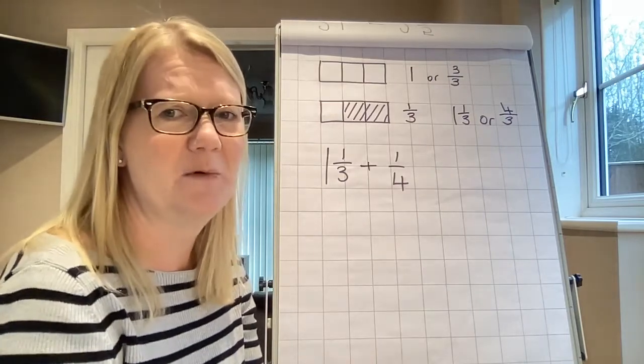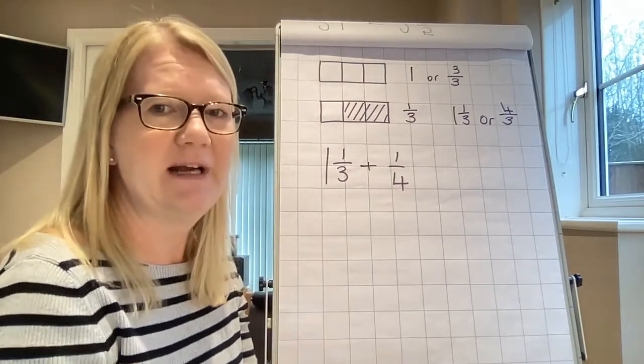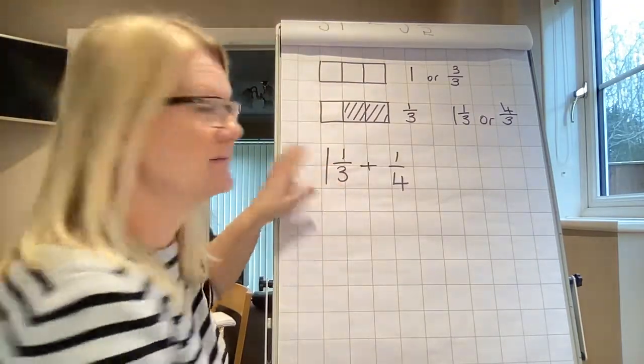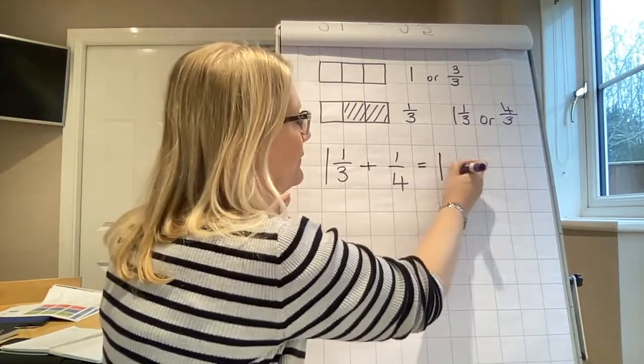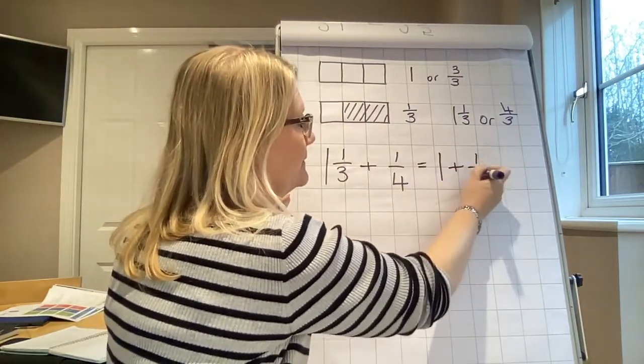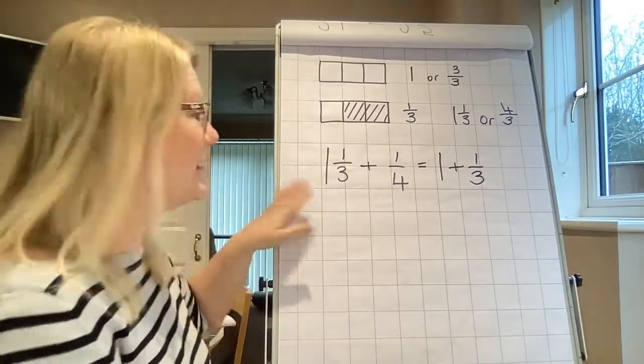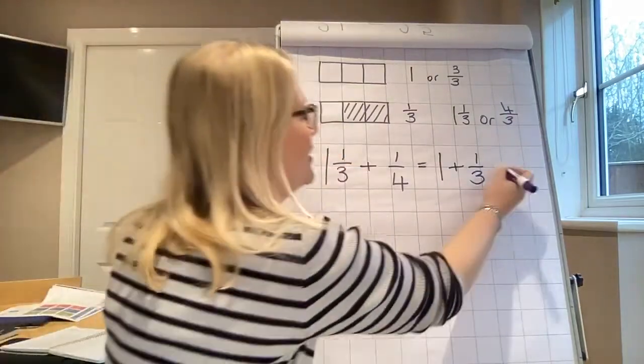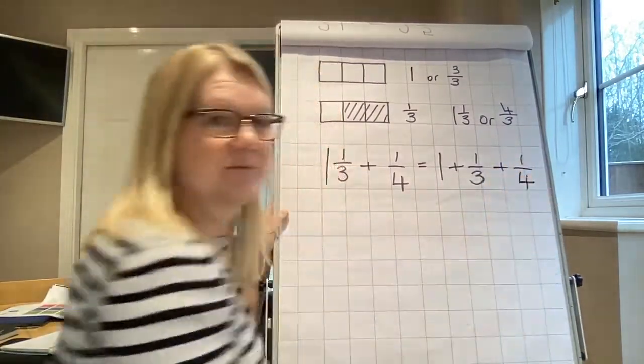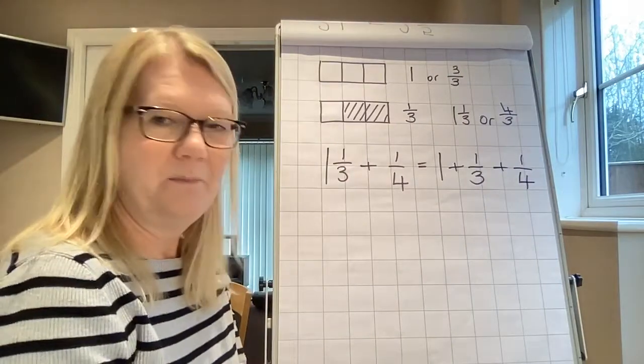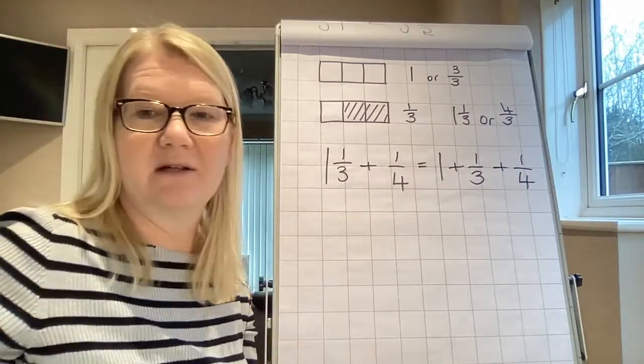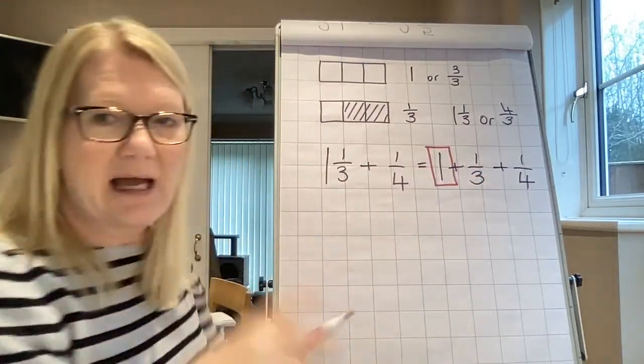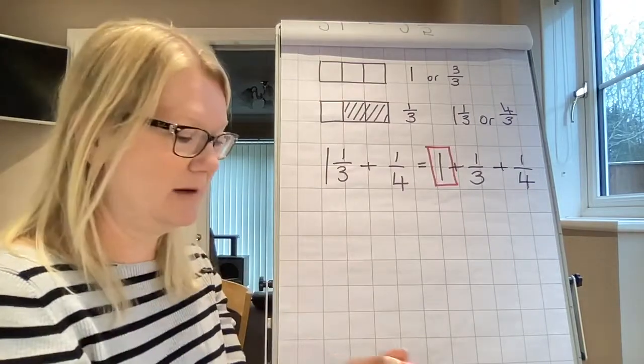Okay, so this is a nice simple one to get us going. First thing I want you to realize, and this shows it very clearly, one and a third can be written as one plus a third. So this calculation we can write as one plus a third plus our quarter. Right, we're now going to park our one. We're going to just park it. We can't forget about it because it's part of the calculation. So it has to show up each time, but we're not going to do anything with it.